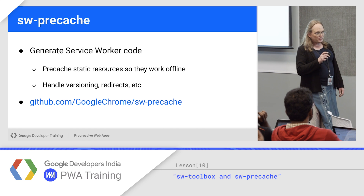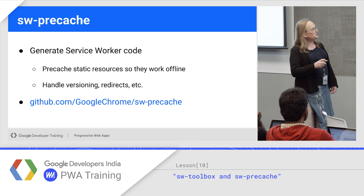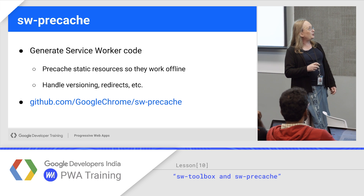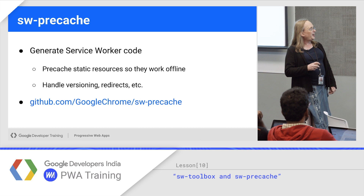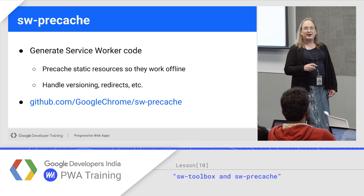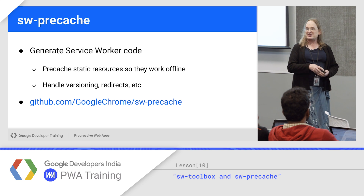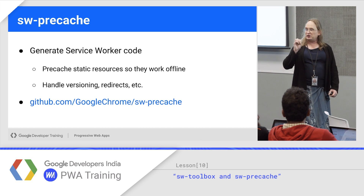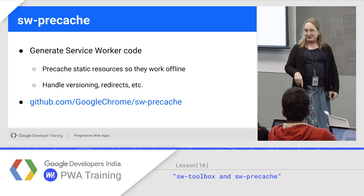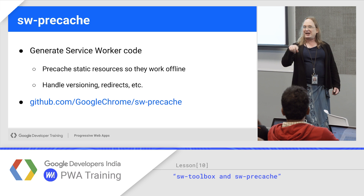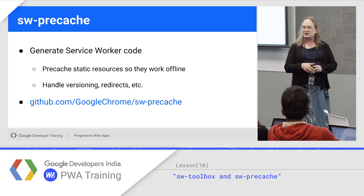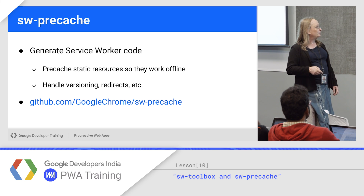Precache generates service worker code, handles versioning, redirects, all of that. For example, if you do a fetch and you have a 301 or 302 redirect come back, you have to handle that. Our code actually handles redirects and such for you — it knows what to do.